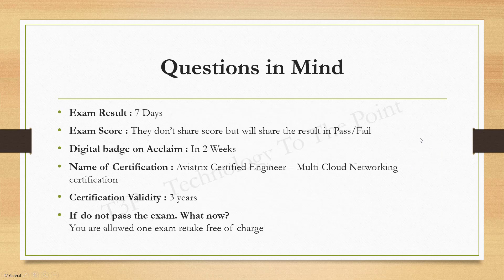Once you complete the certification exam, you will get the result after seven days — they are not providing results immediately, as they validate and check within that period. You will not receive a score; they will only share whether you passed or failed, as they are new in the industry and don't want to disclose that information. Once you pass, you will get a digital badge within two weeks in ACLab, and you will also receive an email. The certification name is ACE Multi-Cloud Networking Certification.